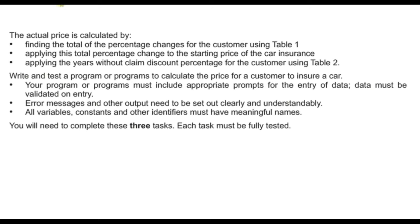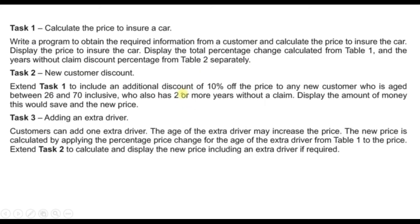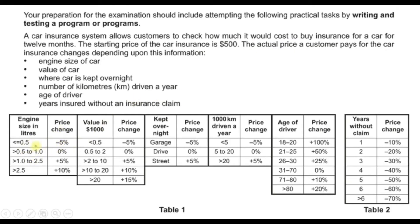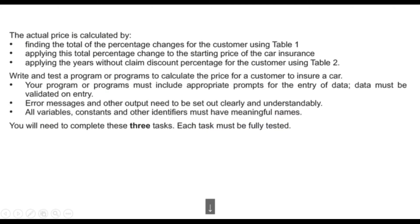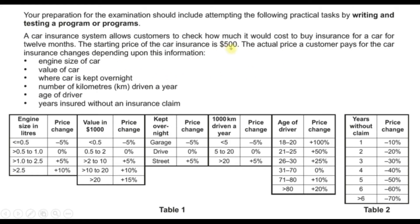The requirements here are to calculate the actual price and how it is calculated across three points. First, we need to find the total of the percentage changes for the customer using Table 1 — the percentage change for every parameter: engine size, value in thousands of dollars, and where the car is kept overnight — and then find the total of all percentage changes.